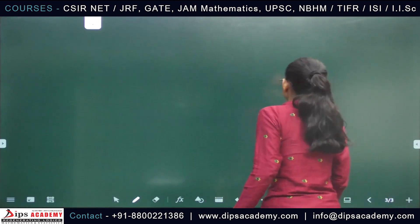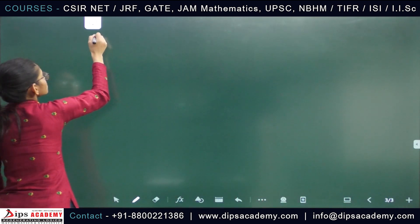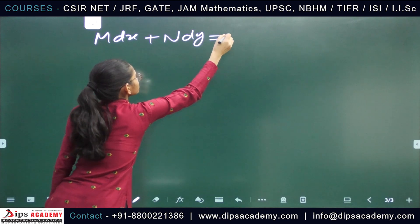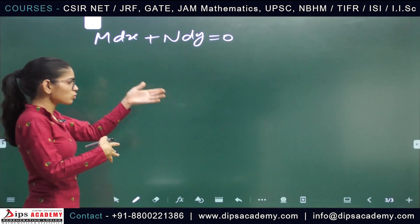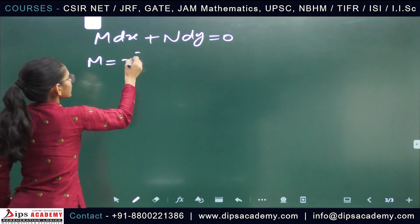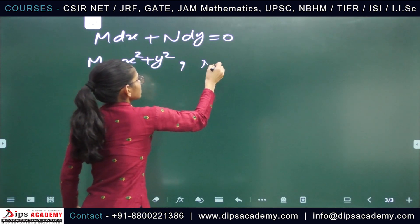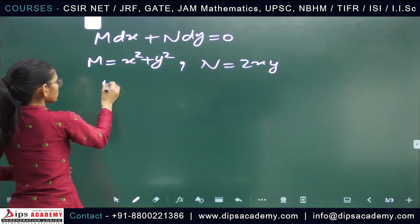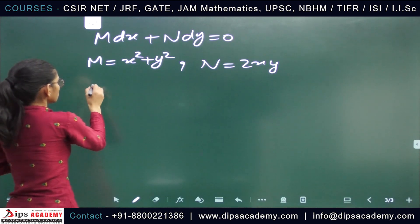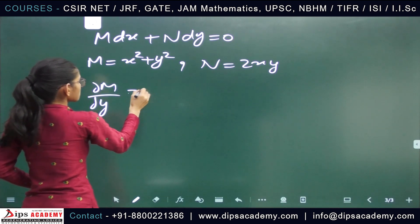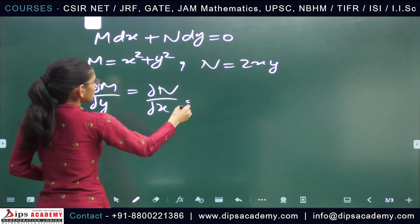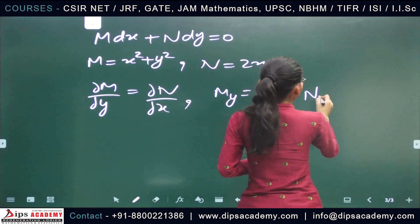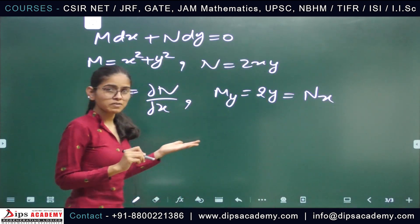This is of the form M dx plus N dy equals 0. Comparing, we identify M as x squared plus y squared, and N as 2xy. To check for exactness, we verify whether del M by del y equals del N by del x. We find that M_y equals 2y, which is exactly equal to N_x. So the given differential equation is exact.